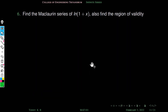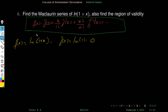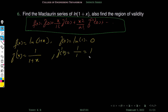Next problem: find the Maclaurin series of log(1+x). Also find the region of validity. We have to find f of 0, f dash of 0, etc. It is given that f of x is log(1+x), so f of 0 equals log 1, which equals 0. The derivative f dash of x is 1 over (1+x), so f dash of 0 equals 1 over 1, which is 1. Then f double-dash of x is minus 1 over (1+x)^2, so f double-dash of 0 equals minus 1.